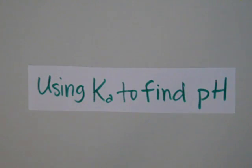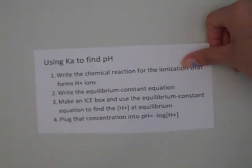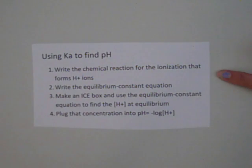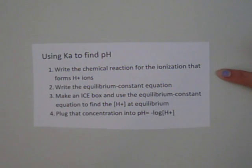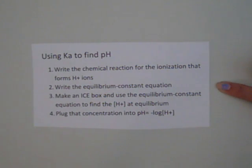Using Ka, the acid dissociation constant, to find pH. The first step is to write a chemical reaction for the ionization that forms hydrogen ions, and use that reaction to write the equilibrium constant equation, which is products over reactants.